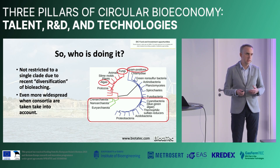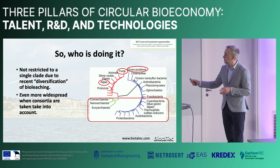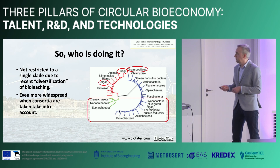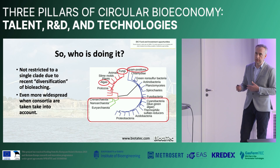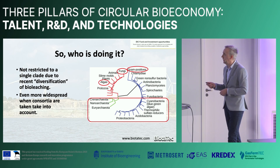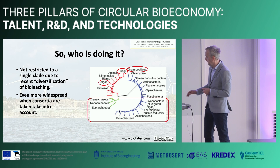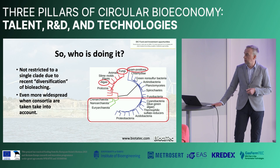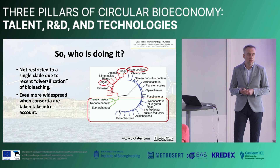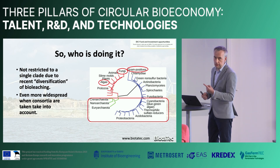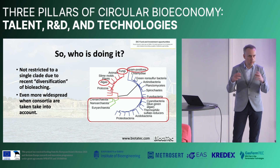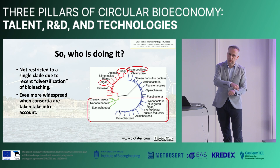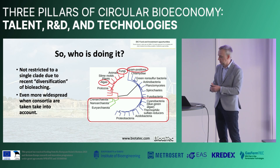Since the metabolic traits necessary for bioleaching are spread throughout the phylogenetic tree, there are a lot of different clades that contribute species to bioleaching — and we're also talking about algae as well as fungi. The picture becomes even more widespread when consortia are taken into account, because sometimes it's insufficient to use just one microorganism. You need a consortium — a collection of different species — where one organism does one thing and the second is dependent on the first organism's metabolism, like a gearbox of these things.